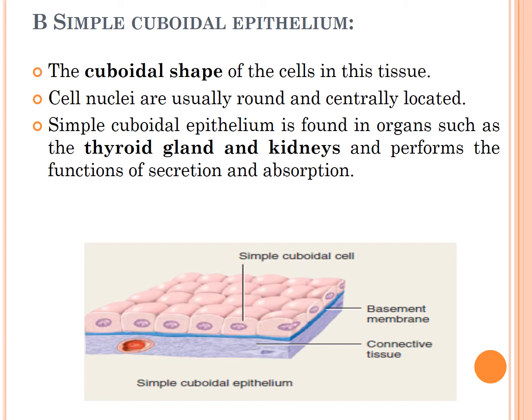The second type of simple epithelium is simple cuboidal epithelium. As the name indicates, the shape of the cell is cube-shaped. Cell nuclei are usually round and centrally located. Simple cuboidal epithelium is found in the thyroid gland and kidney, and it performs the functions of secretion and absorption.